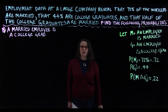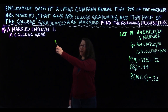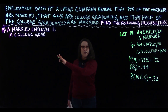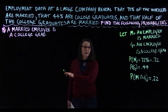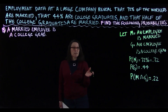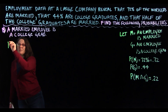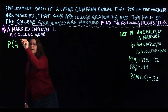Now we're on to part B. We're going to look at a married employee — what's the probability a married employee is a college grad? We're already only looking at married employees. On the condition that the employee is married, what's the probability they're a college grad? This is a conditional probability: P(G | M), given that they're married. We're only looking at the subset of employees that are married.